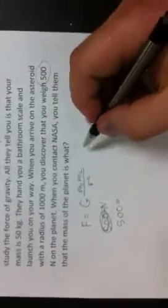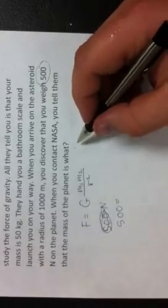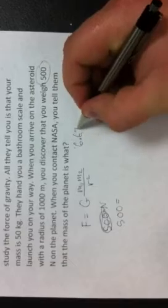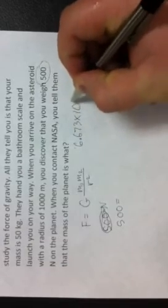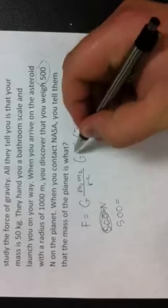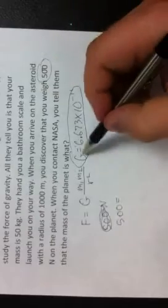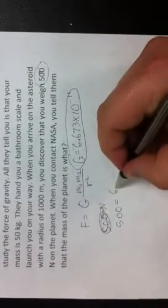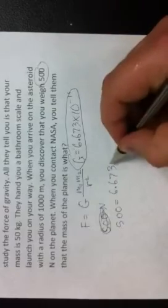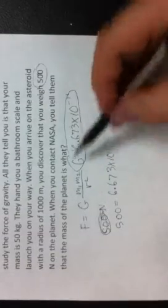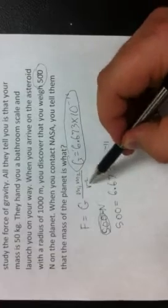Now, the gravitational constant, which will also be given to you on your exam, I don't necessarily want you to memorize that number, is going to be 6.673 times 10 to the negative 11th. So this big G is equal to this here. This value is this right here. So far we have 500, which is the force that's given in our problem, is equal to the gravitational constant, which is 6.673 times 10 to the negative 11th, times the mass of the first times the mass of the second divided by the radius squared.